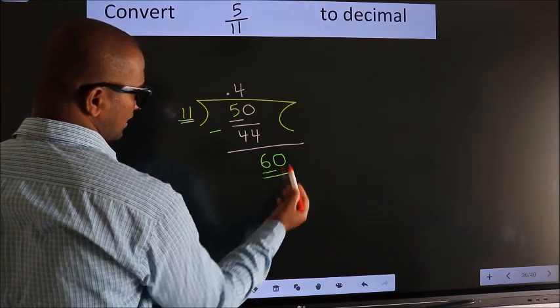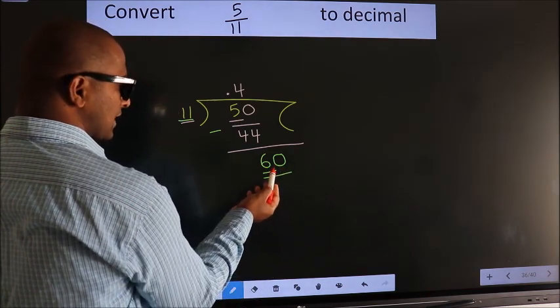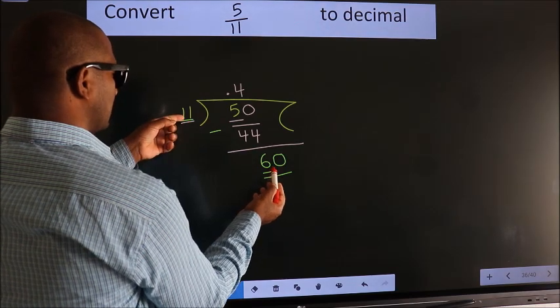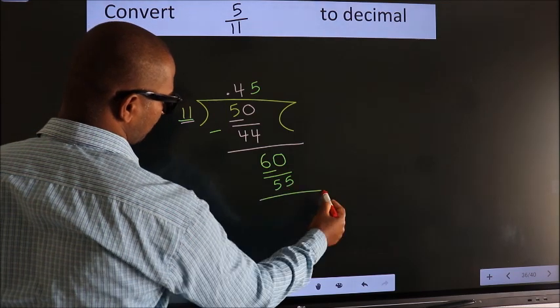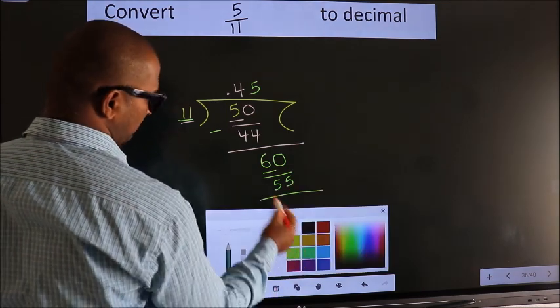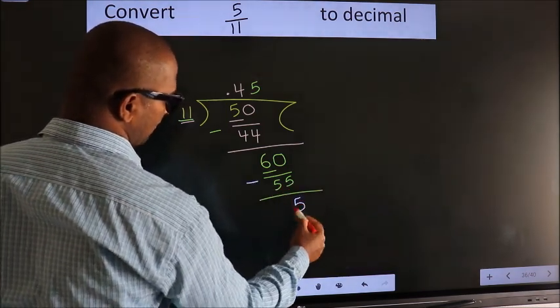So 60. A number close to 60 in 11 table is 11 fives, 55. Now we subtract. We get 5.